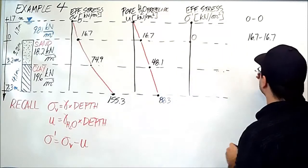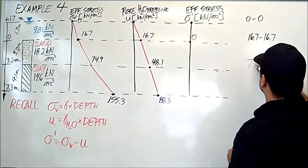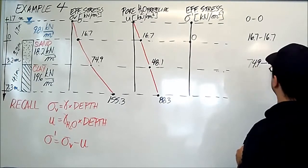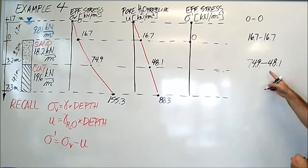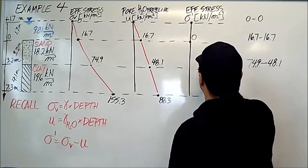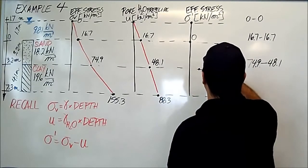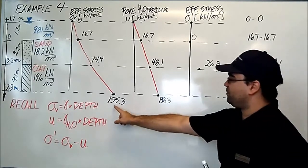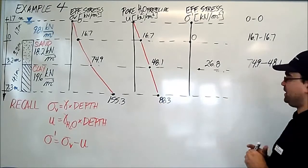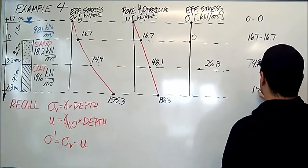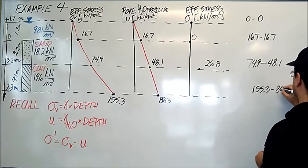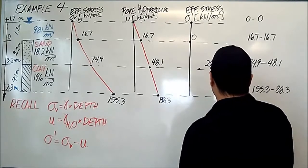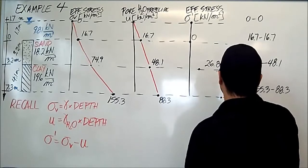Next point: 74.9 minus 48.1 equals 26.8. And the last one: 155.3 minus 88.3 equals 67.0.